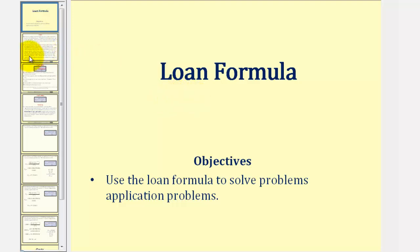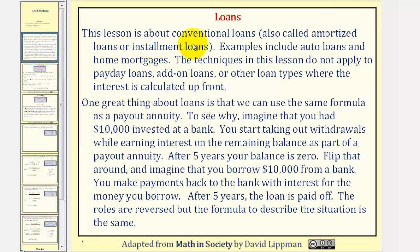Welcome to a lesson on the loan formula. This lesson is about conventional loans, also called amortized loans or installment loans. Examples include auto loans and home mortgages. The techniques in this lesson do not apply to payday loans, add-on loans, or other loan types where the interest is calculated up front, though I do have lessons on these topics.